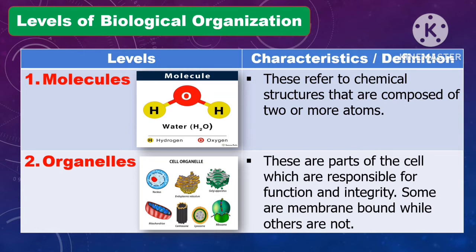The first level of biological organization is molecules. This refers to chemical structures composed of two or more atoms. The second level is organelles. Organelles are parts of the cell which are responsible for its function and integrity. Some are membrane-bound while others are not.